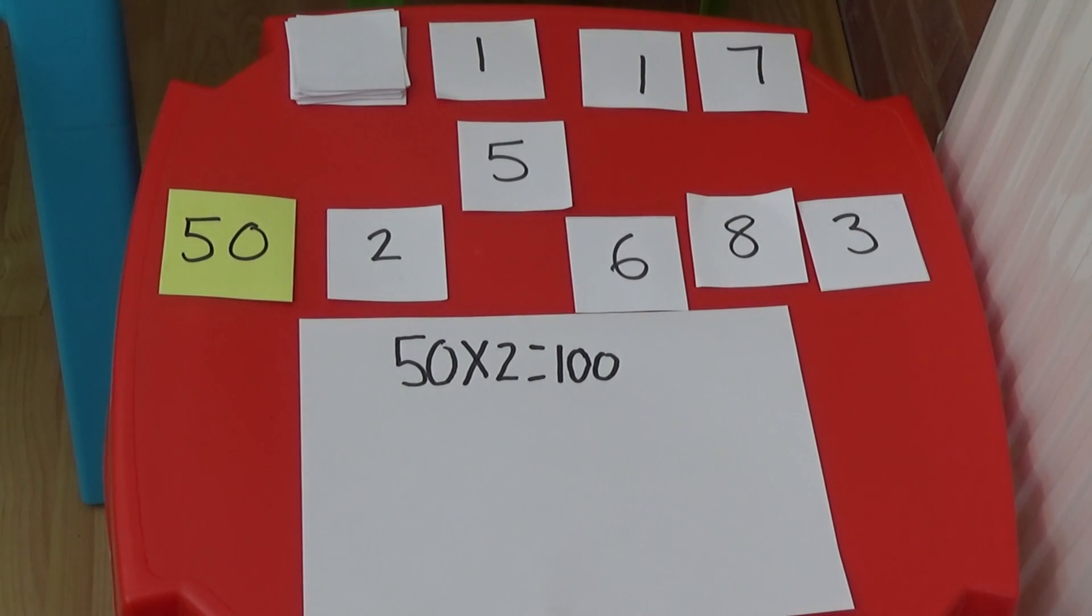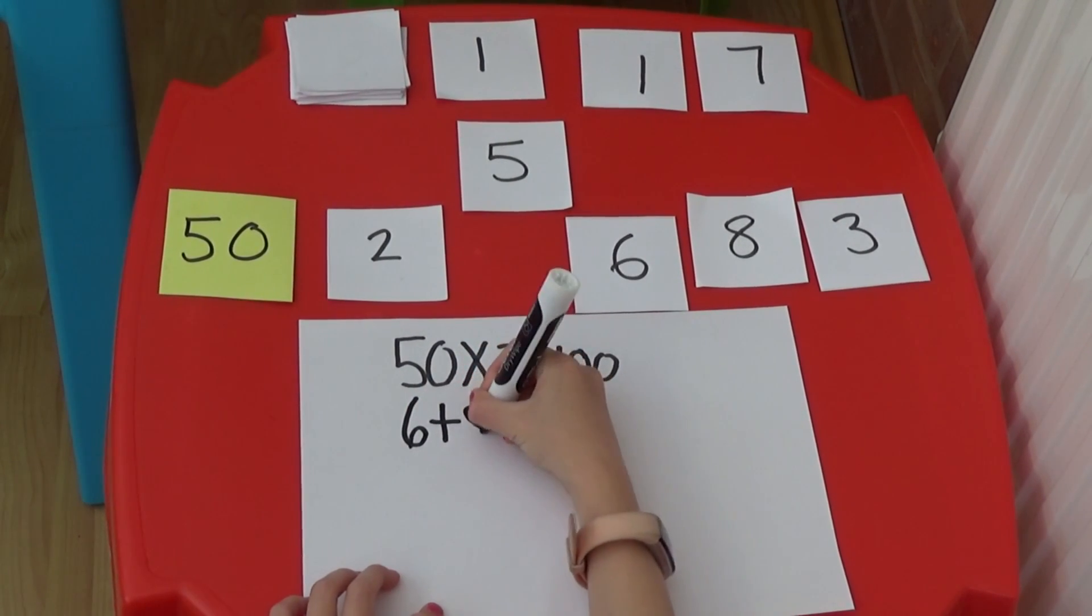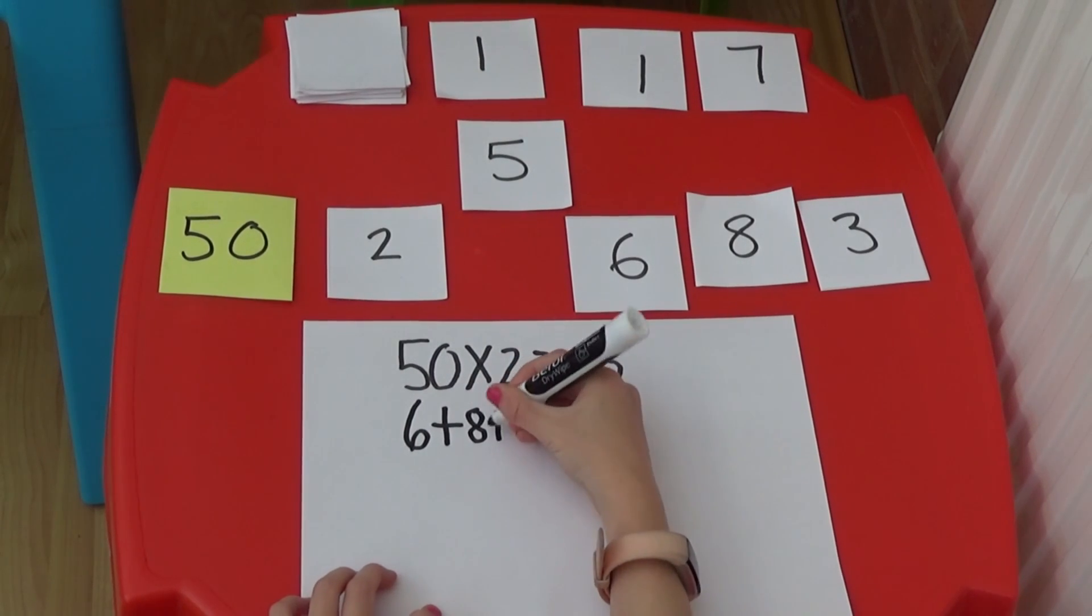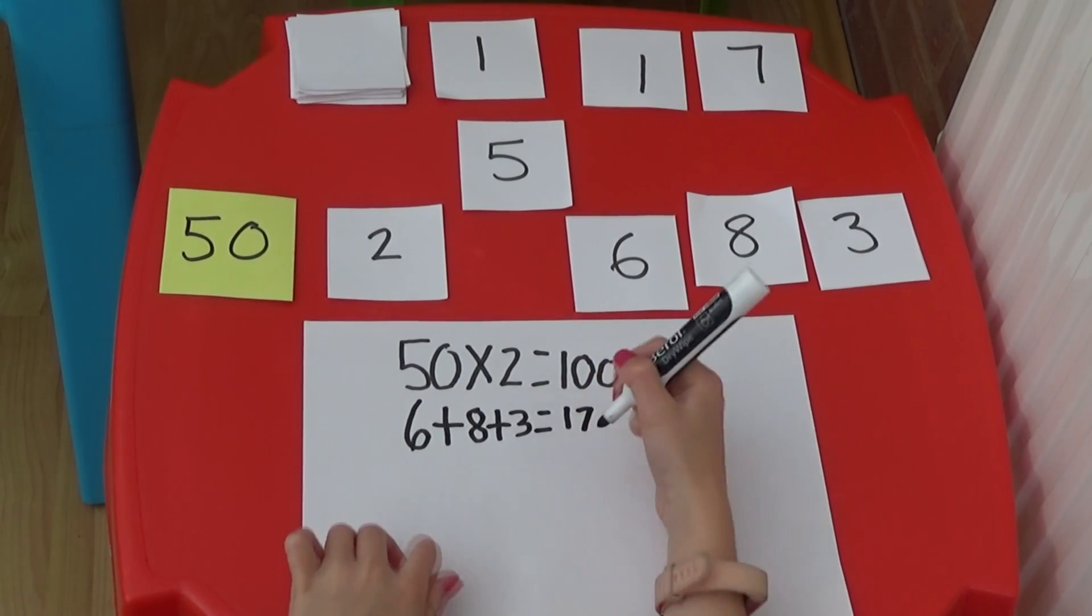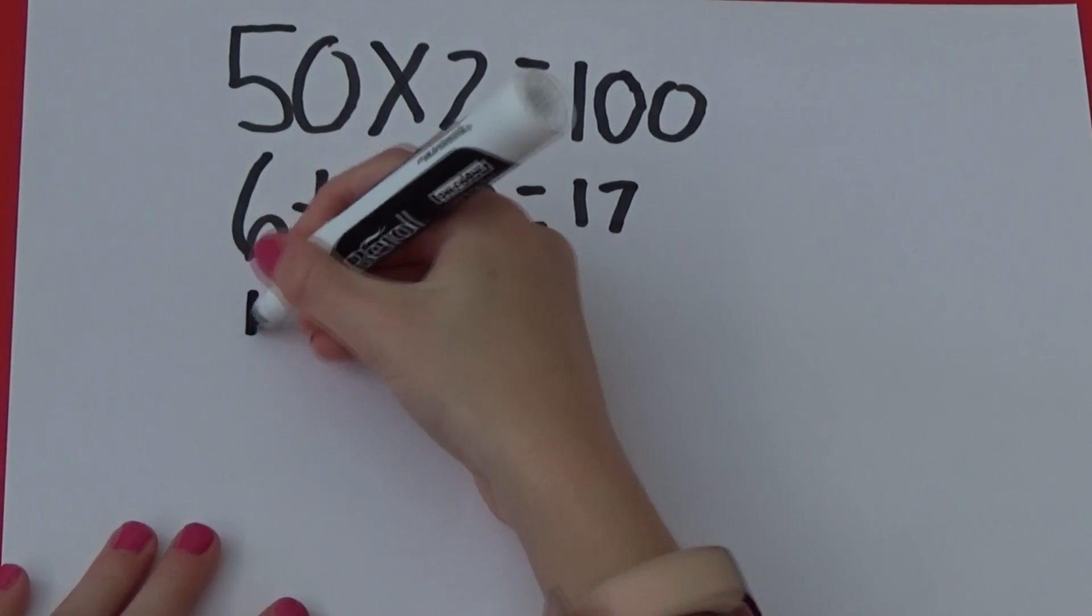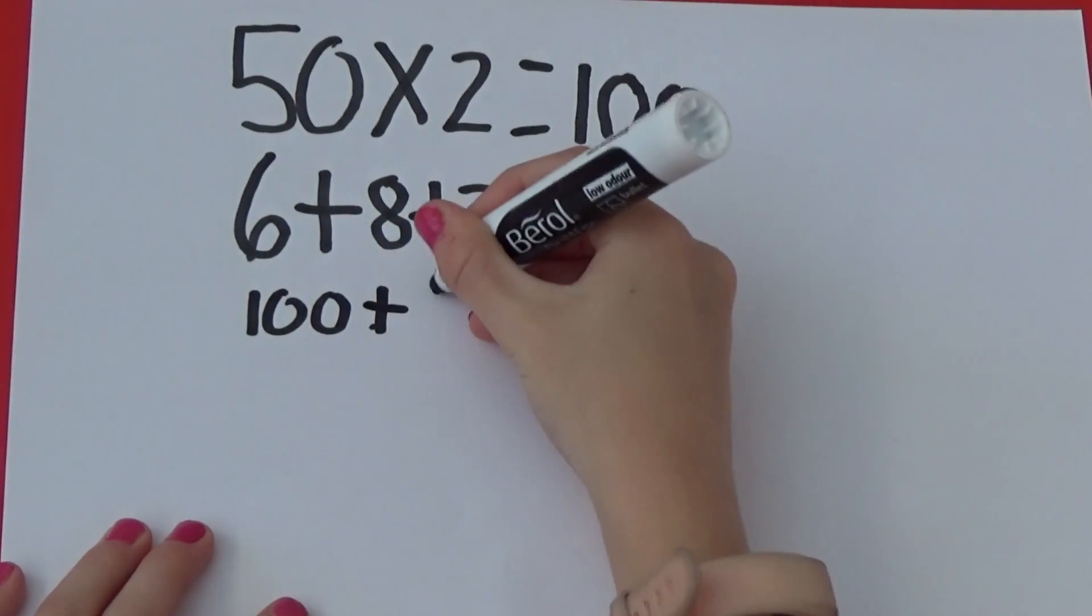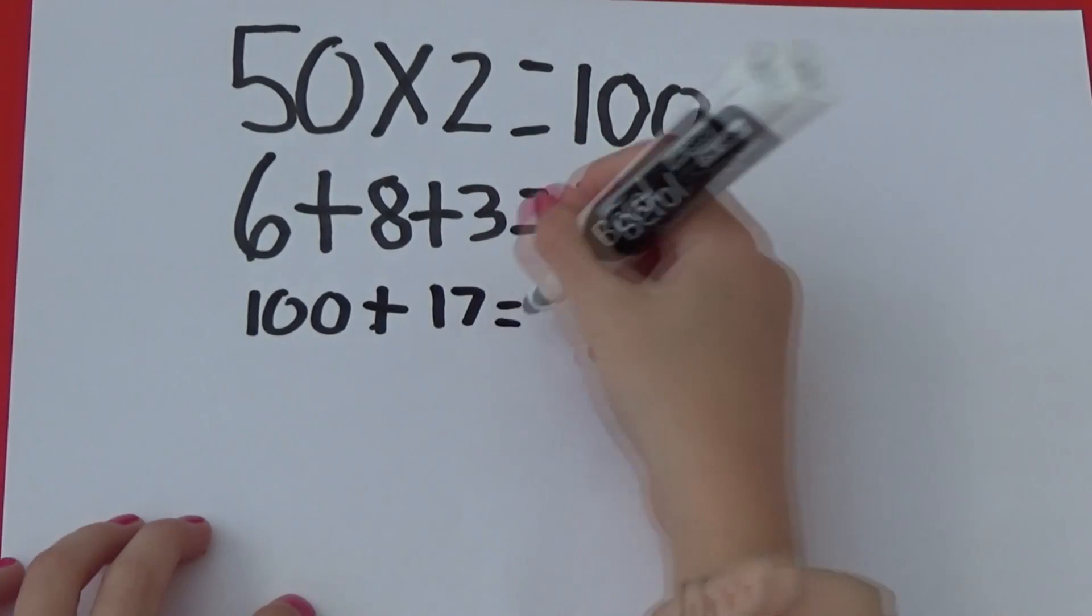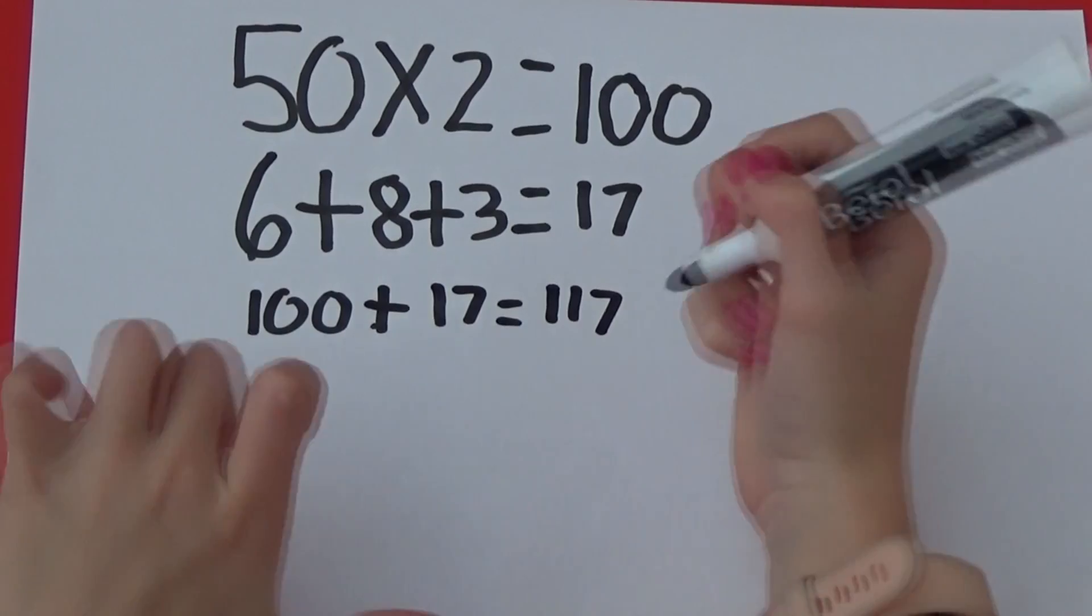I will have 6, add 8, add 3, equals 17. If I add together the 100 and the 17, that gives me my target number which is 117.